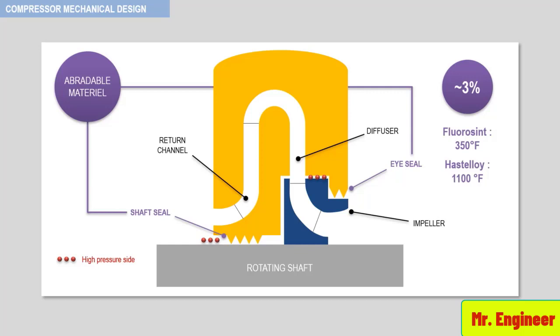Pressure balance is easily achieved by ensuring that the pressure behind the seals, as seen here, is less than or equal to the pressure between the labyrinth surface and rotor surface.